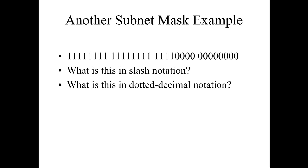Let's look at another example. How many ones do we have? 8 plus 8 is 16, then 17, 18, 19, 20 — so this is a /20. Dotted decimal: 255.255 plus we skip the 1, 2, 4, 8 positions, so this is 16+32+64+128. If my math is correct, in dotted decimal form that should be 255.255.240.